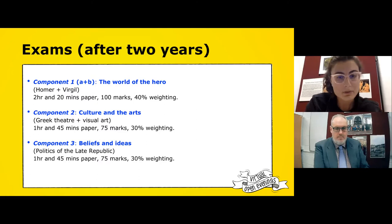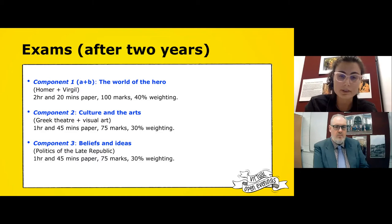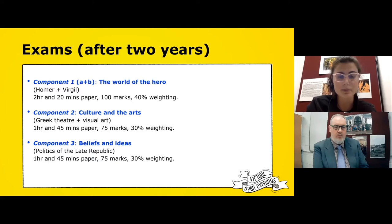As I was saying, it's linear so we've got exams after two years. Here is a breakdown of the papers you will be sitting, together with the marks and the time allocated for each paper. The first component — World of the Hero (Homer plus Virgil) — is a two hours twenty minutes paper worth 100 marks. The Greek Theatre paper together with visual arts is an hour and 45 minutes, 75 marks. Component three, Beliefs and Ideas, covering the politics of the late Republic, is also an hour and 45 minutes, 75 marks.